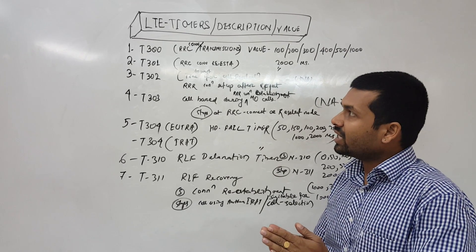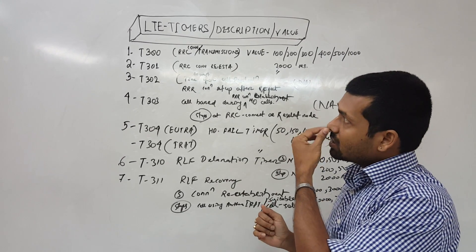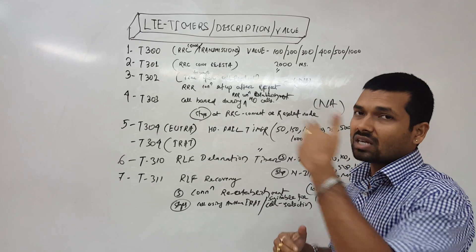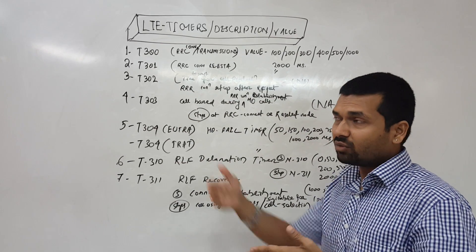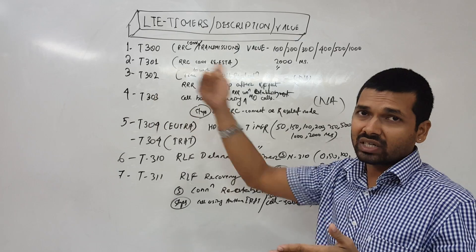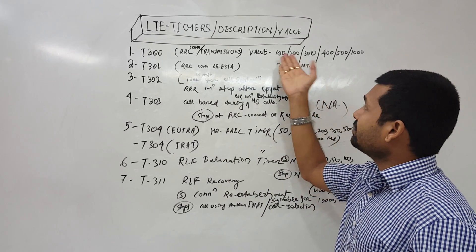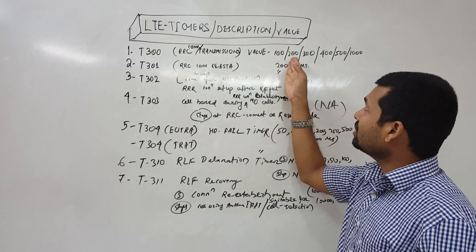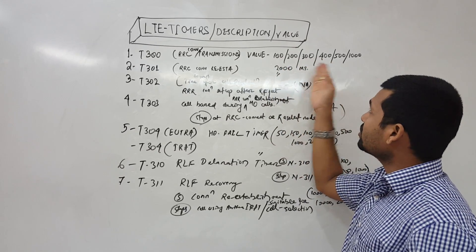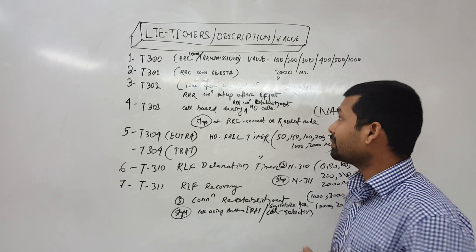Then the second timer T301. This is for RRC connection re-establishment request and when we are getting acknowledgement or rejection. Again the value is the same, the range is from 100 milliseconds to 200, 300, 400, 500, 1000, or 2000 milliseconds as per the operator's requirement.